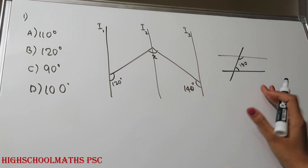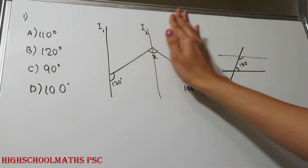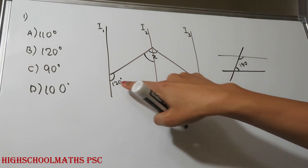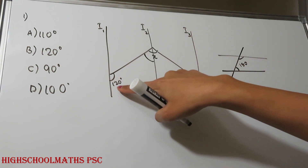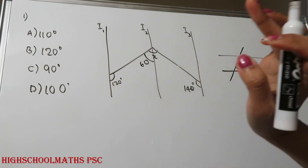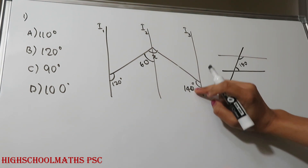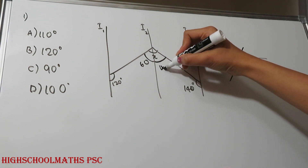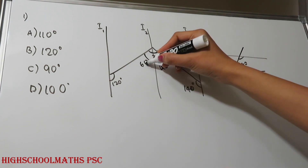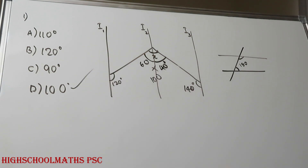Here we have 3 parallel lines — samanthara rekha. We have I1 and I2. This angle is 120 degrees. On a straight line, 180 minus 120 is 60 degrees. In these two parallel lines, this angle is 60 degrees, and 60 plus 60 is 180. The answer is 100 degrees.